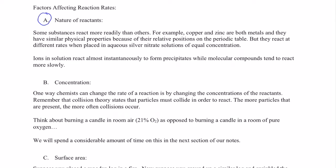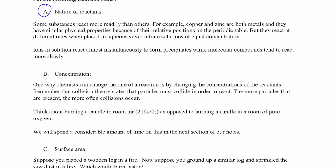First of all, the nature of reactants. Some substances react more readily than others. For example, copper and zinc are both metals with similar physical properties because of their relative positions on the periodic table, but they react at different rates when placed in silver nitrate solutions of equal concentrations. Ions in solution—because one's positive and one's negative, there's attraction for each other—tend to react almost instantaneously, whereas molecular compounds react much more slowly because they have to overcome electron-to-electron repulsion between molecules.